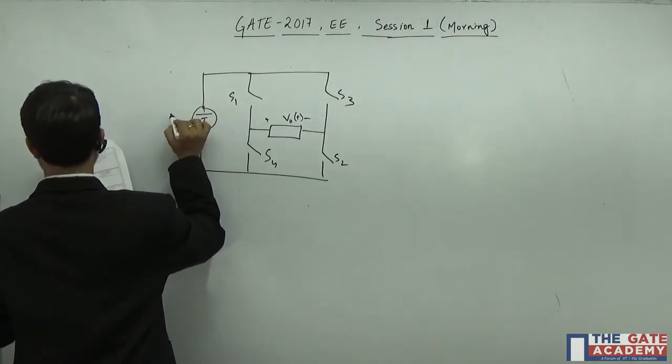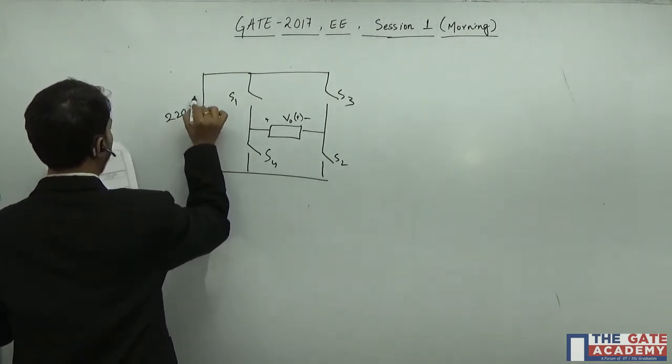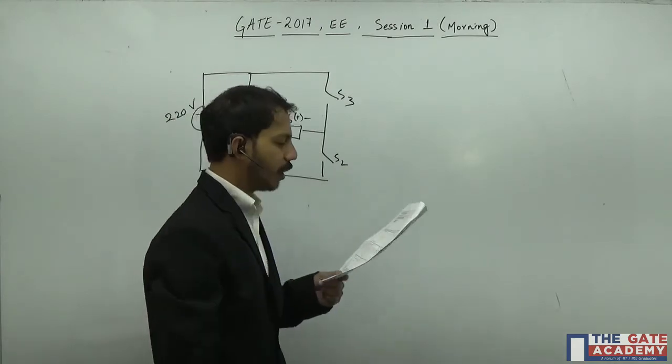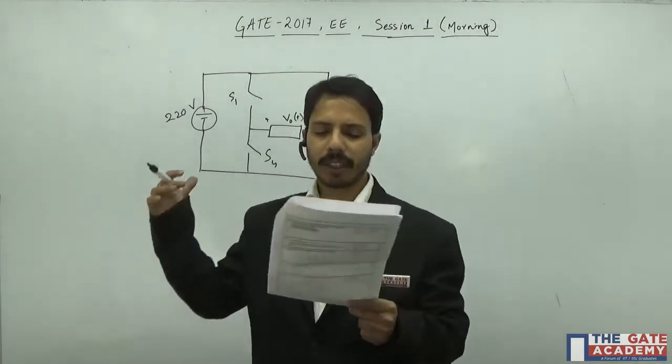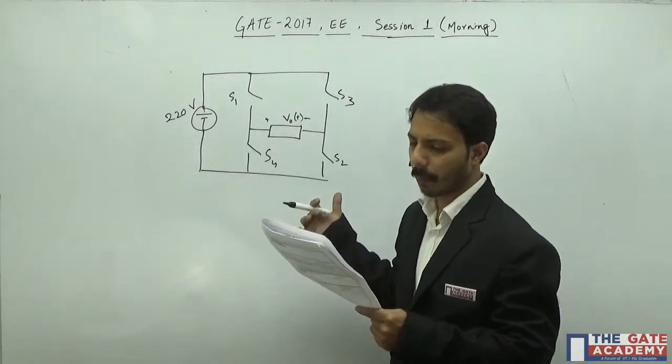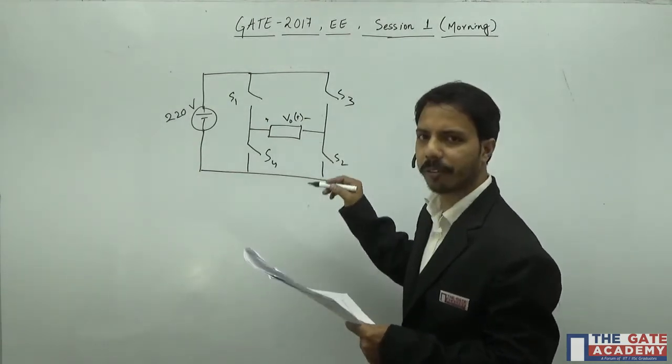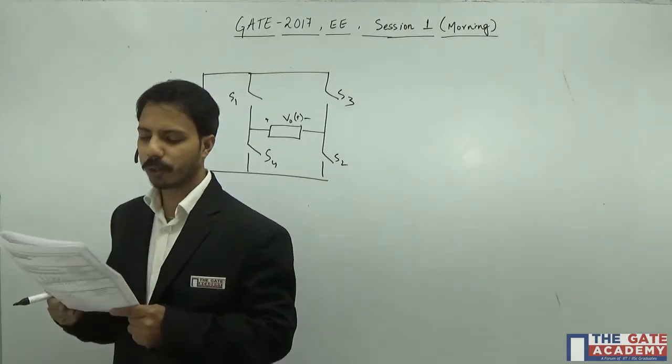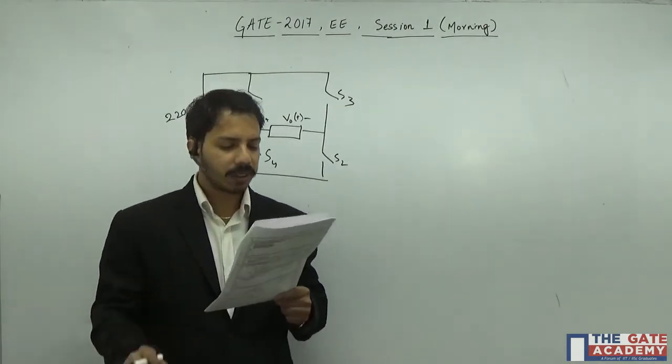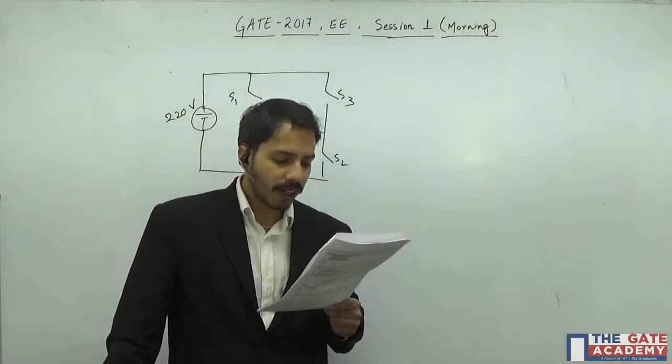The voltage, the DC voltage that is applied is 220 volts. In this particular converter circuit, the output waveform has a frequency of 400 Hertz. What we're asking is the RMS value of the fundamental component of the output.